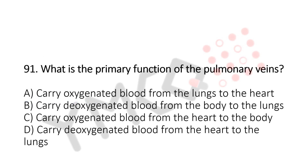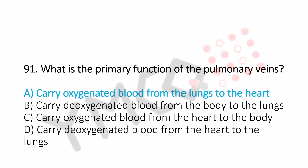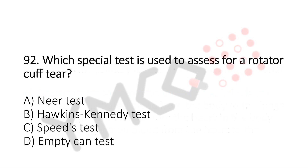What is the primary function of the pulmonary vein? Option A: carry oxygenated blood from lungs to the heart. Option B: carry deoxygenated blood from body to the lungs. Option C: carry oxygenated blood from heart to the body. Option D: carry deoxygenated blood from heart to the lungs. And the answer is option A, carry oxygenated blood from lungs to the heart. Now let us move to question number 92.